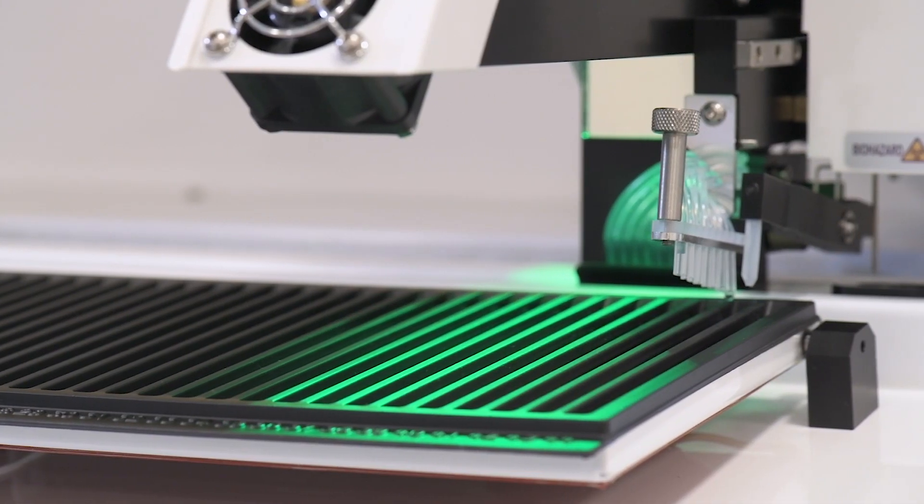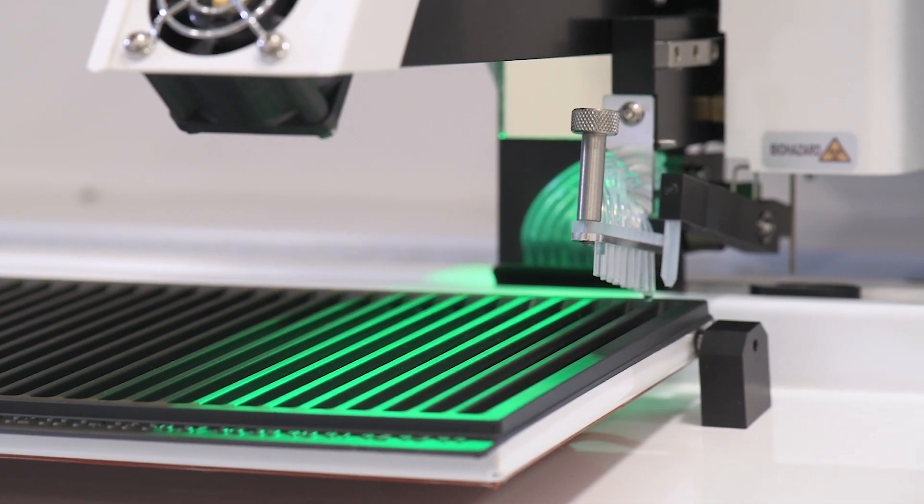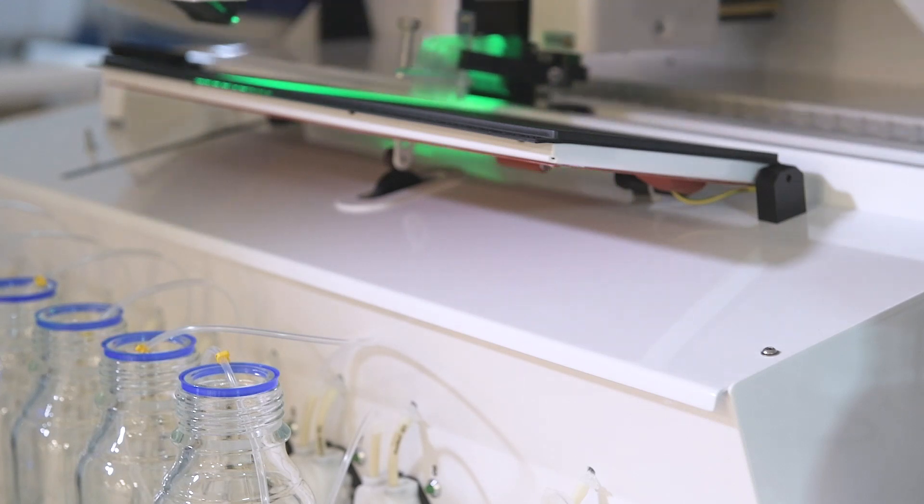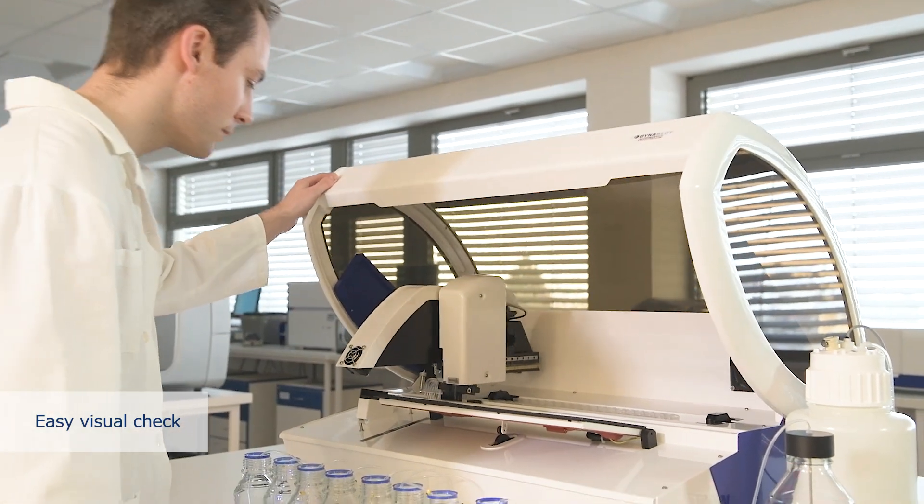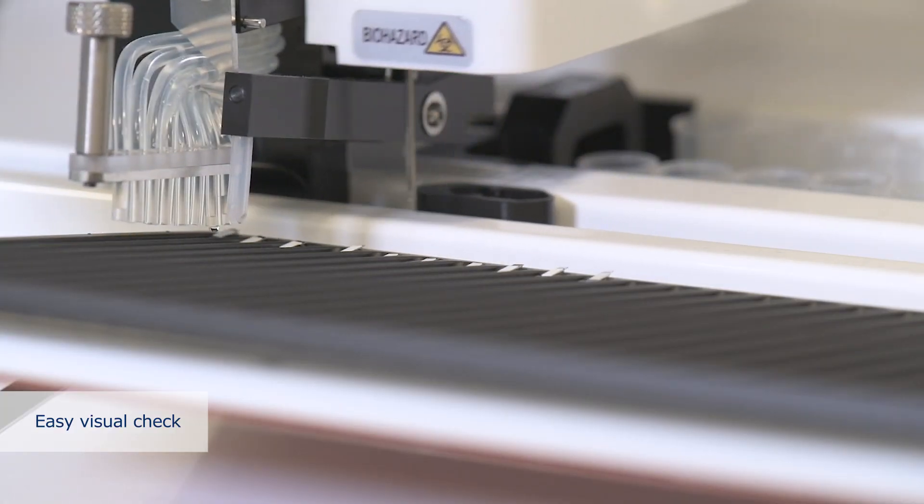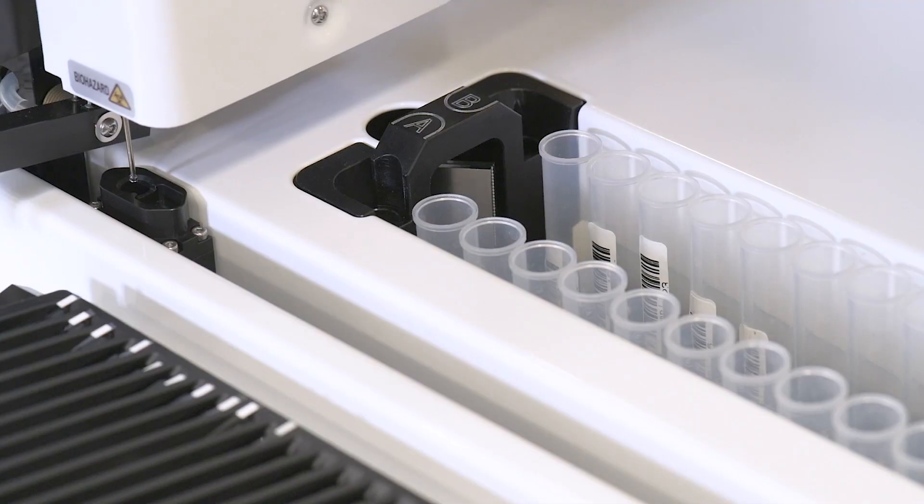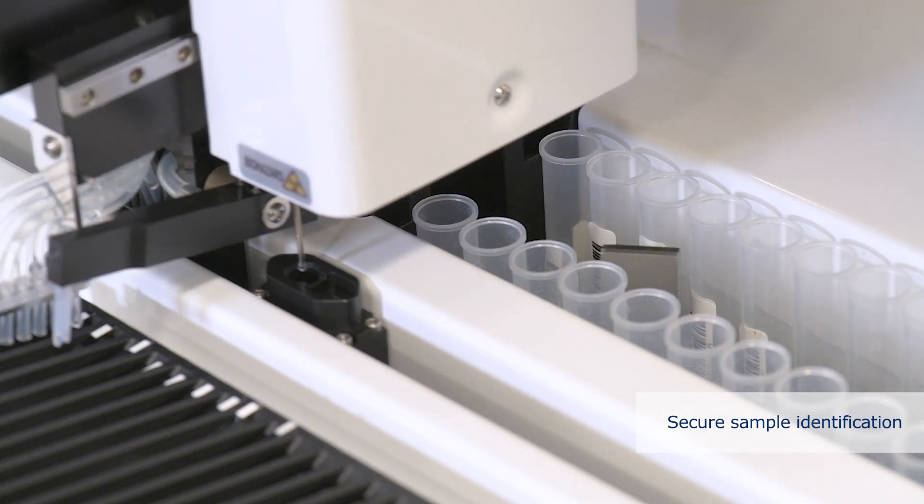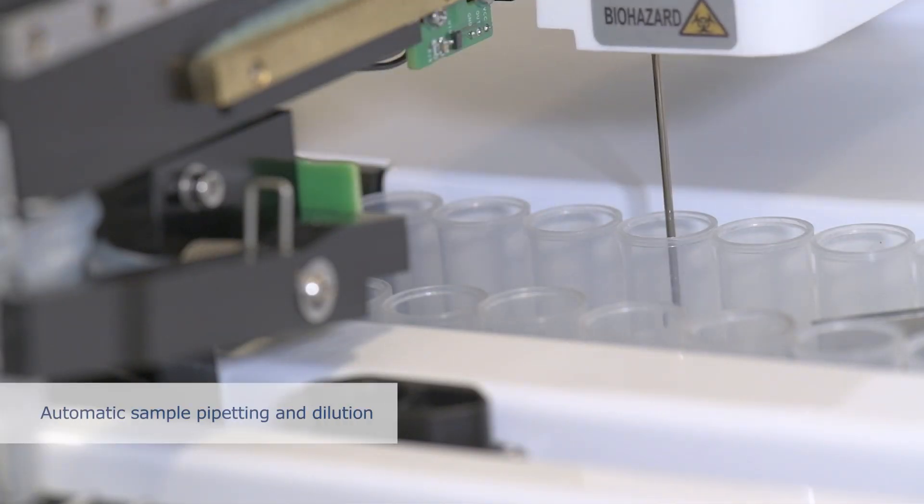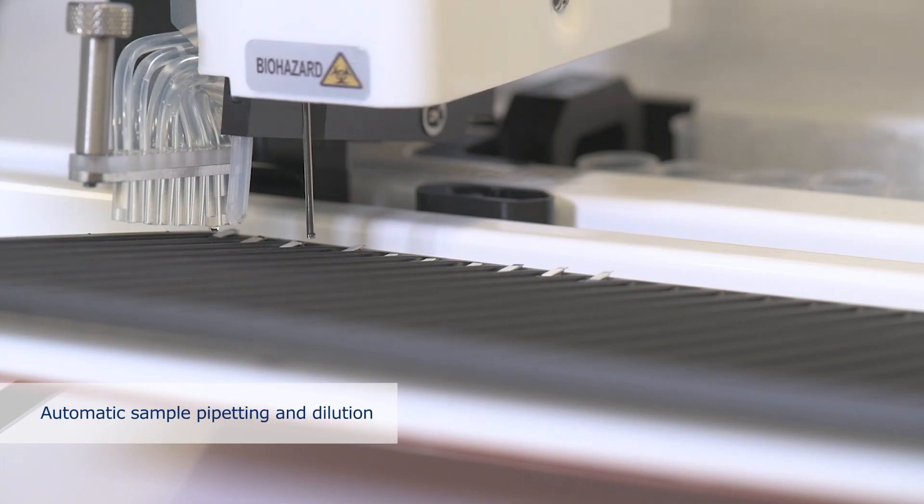DynaBlot Automatic then performs all downstream steps automatically without any input from the operator. The smart layout allows easy access and a visual check of the process. Sample tubes can be identified by an integrated barcode reader. The washable pipetting needle is able to sense the level of samples and dilutes them directly in the tray.